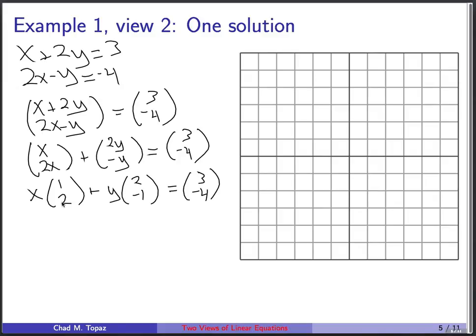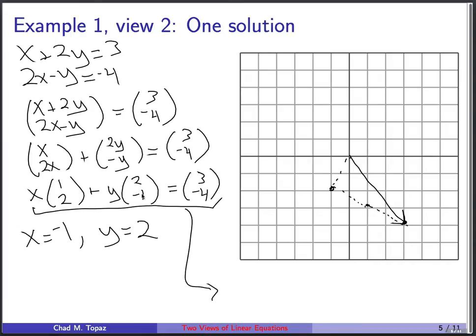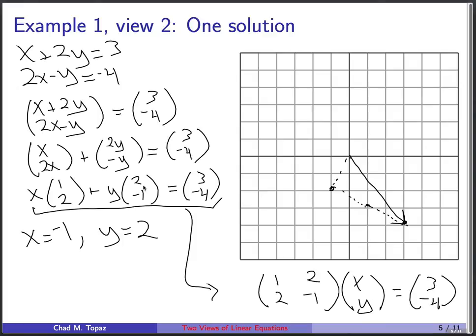A geometric way to think about this: I give you two vectors, [1, 2] and [2, -1], and you want to figure out how many steps of each you have to take to get to the target vector [3, -4]. You start at the origin. Once it's written as a linear combination, we arrange the two vectors into a matrix and ask what coefficients x and y lead us to [3, -4] — this is the matrix vector form of the problem.